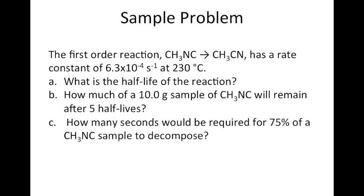Let's look at a sample problem dealing with half-lives. The question involves a first-order reaction where CH₃NC is converted to CH₃CN, with a rate constant of 6.3 × 10⁻⁴ s⁻¹ at 230°C. We need to find: (A) the half-life, (B) how much of a 10-gram sample remains after 5 half-lives, and (C) how many seconds are required for 75% of the CH₃NC to decompose. Pause and try to solve these before following along.